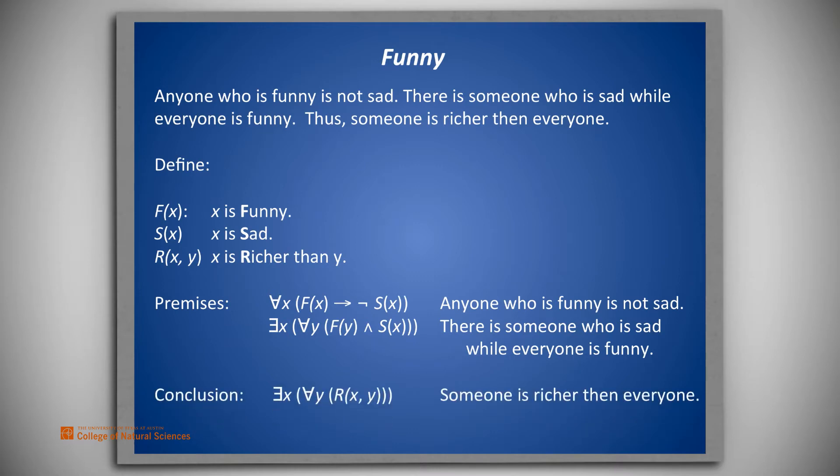The conclusion we seek is there exists an x such that for all y, r of x and y. That is, someone is richer than everyone.